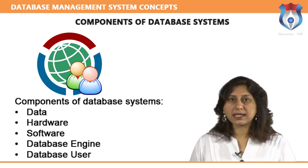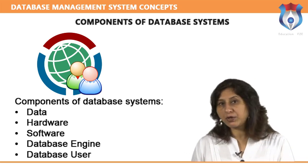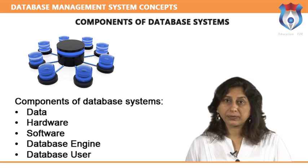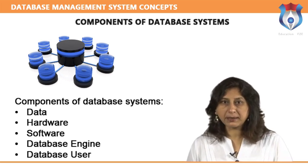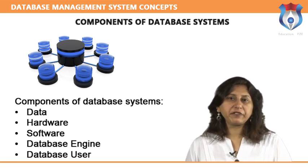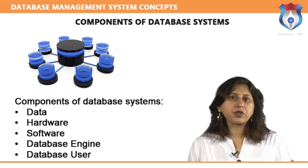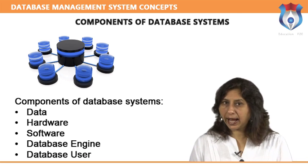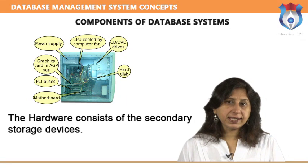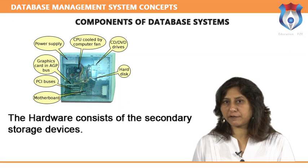Metadata: a description of the structure of the database is known as metadata — it basically means data about data. System tables store the metadata, which includes number of tables and table names, number of fields and field names, and primary key fields. Application metadata stores the structure and format of queries, reports and other applications.